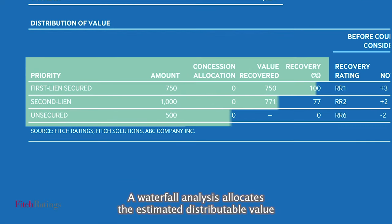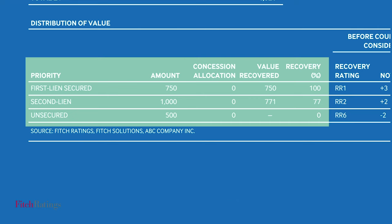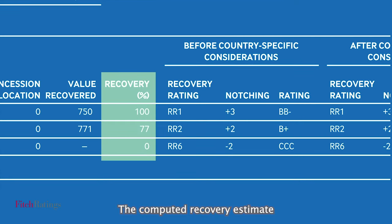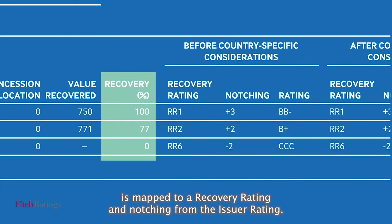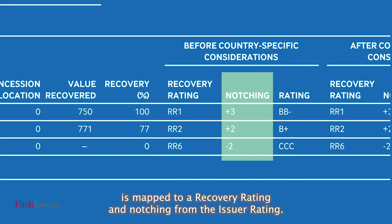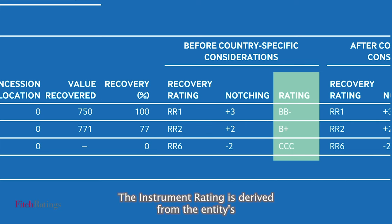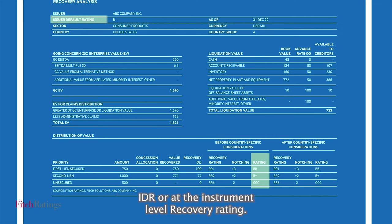A waterfall analysis allocates the estimated distributable value to creditors according to the relative seniority of their claims. The computed recovery estimate is mapped to a recovery rating and notching from the issuer rating. The instrument rating is derived from the entity's IDR and the instrument-level recovery rating.